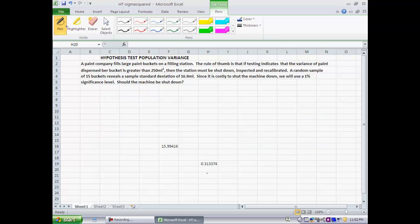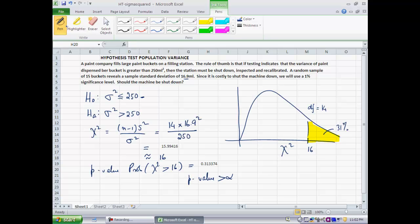So the p-value is greater than α. I'm only willing to accept a 1% chance, α is 1% here. So I'm only willing to accept a 1% chance of making the wrong call. And what this calculation is telling me is that if the null were true as an equality, then there is a 31% chance of seeing a sample statistic at least as extreme as the one I just saw, purely by chance. That's way too high. So it's certainly nowhere near close to the 1% threshold that I have. So I cannot reject the null. Meaning I would say that there is not enough evidence from the sample data to conclude that the variance of paint dispensed to the buckets is greater than 250 milliliters. So I do not have enough evidence to shut the machine down. That is my conclusion at the 1% level of significance.